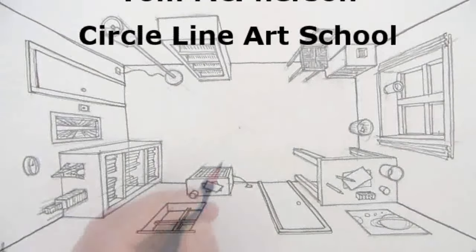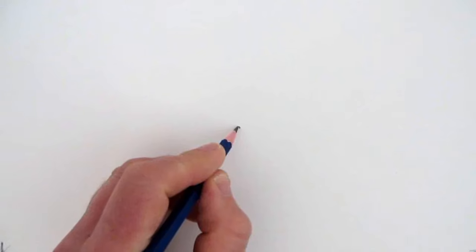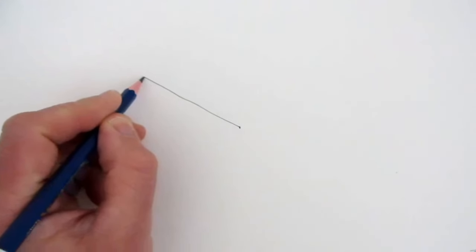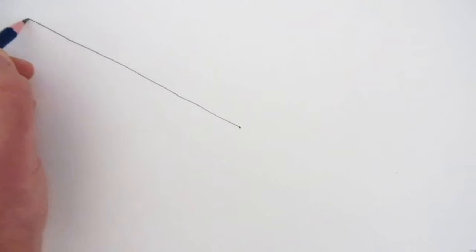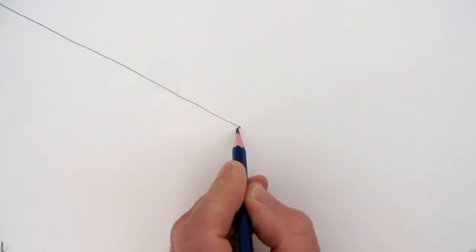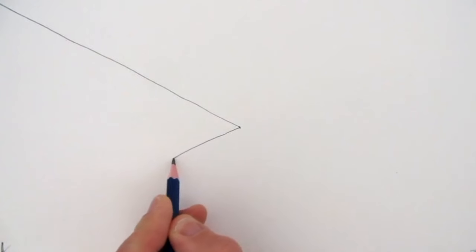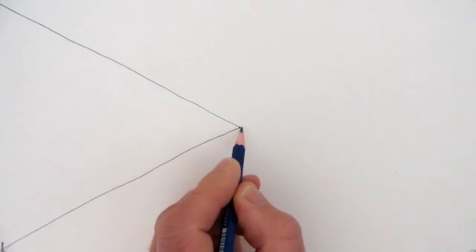The first step in this drawing is to draw a dot in the center of the page, and then from this dot we need to draw four lines which go to the four corners of the paper that we're using. These four lines will represent the four walls of the room that we're looking down upon.